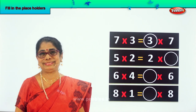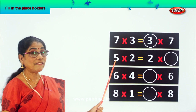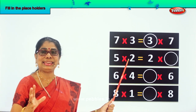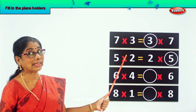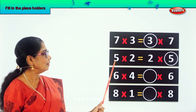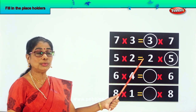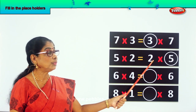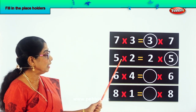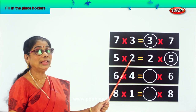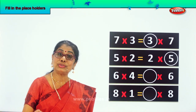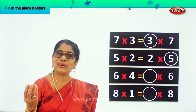Look at this. 5 into 2. What is 5 into 2? 10. On the other side we must get the same answer. 5 into 2 is equal to 2 into what? 5. Very good. So we have 5 into 2 equal to 10, which is also equal to 2 into 5, which is also equal to 10.